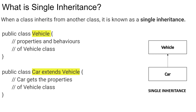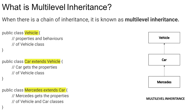Multi-level inheritance is different from single inheritance — it has multiple levels. On the right-hand side there is a Vehicle class, below that a Car class which extends Vehicle, and below Car there is a Mercedes class which extends Car. So we have three levels: Vehicle, Car, and Mercedes. In the code, class Vehicle has properties and behavior, class Car extends Vehicle, and class Mercedes extends Car. Mercedes gets the behavior of both Vehicle and Car — that is multi-level inheritance.